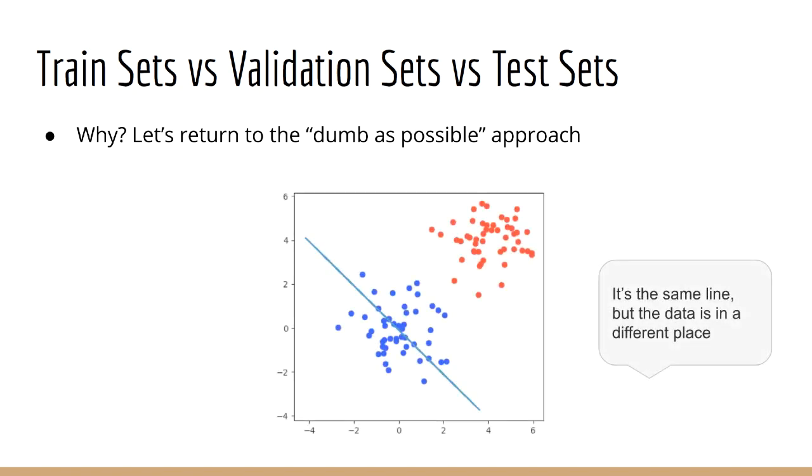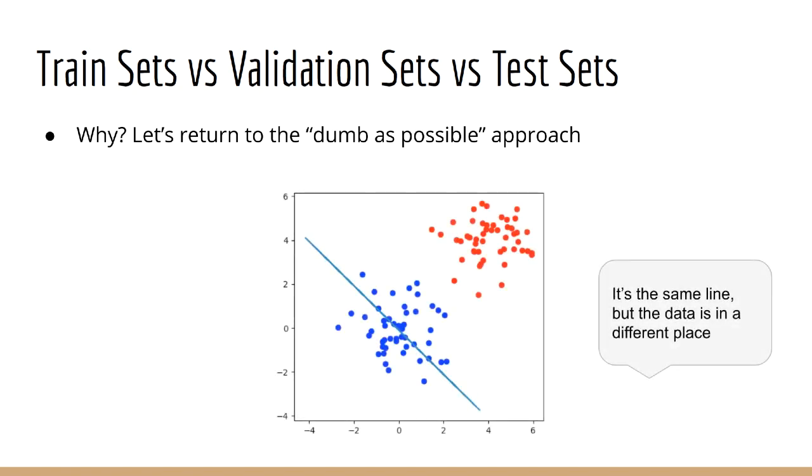So what happens when tomorrow's data looks like this? Now all of a sudden, the classifier is no good. In fact, it's terrible. Well, that sucks because this is actually the data I really care about classifying. I don't care about classifying past data. Why? Because I already know what the answer is, so there's no need to classify those data points anymore.